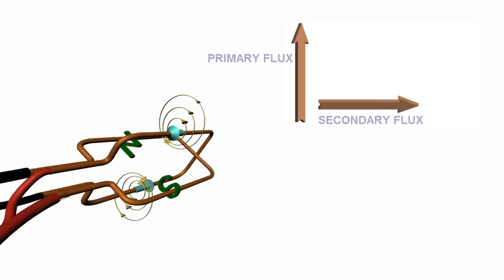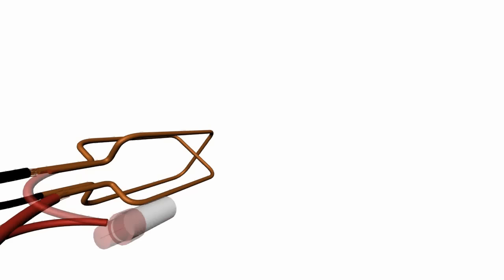Now let's include a capacitor in the second winding circuit. Presence of the capacitor will make sure that this current is at 90 degree phase difference from the first winding current.